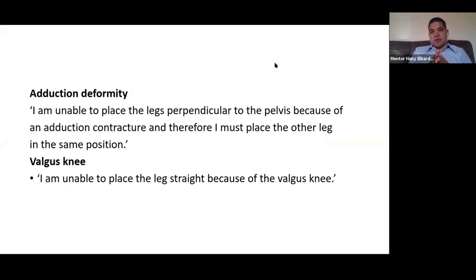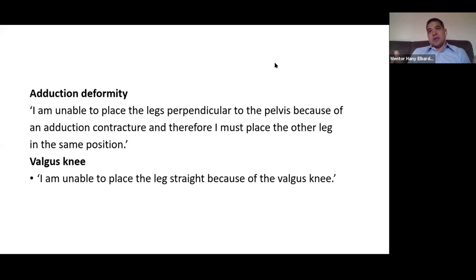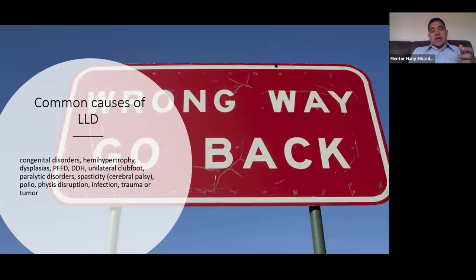When placing the patient on the bed, square the pelvis and put the two limbs parallel to each other to take the true measurement. However, if the patient has an abduction deformity, don't force them — say to the examiner: 'I am unable to place the legs perpendicular to the pelvis because of abduction contracture.' The same applies if there is a valgus knee deformity — don't hurt the patient.